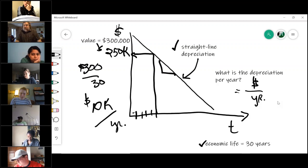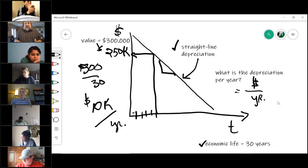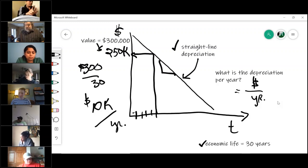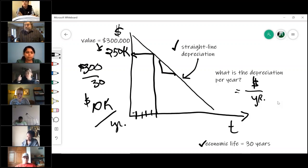If it depreciated $10,000 a year, in five years it would lose $50,000. Therefore the value today would be worth $250,000, and it is straight-line, meaning it's the same every year. And it's just the value divided by the economic life of a property—that's how we calculate straight-line depreciation. Are we good? Thumbs up, because there are a couple calculations in your homework.